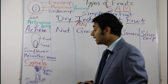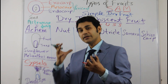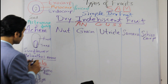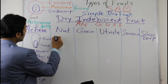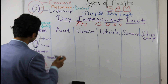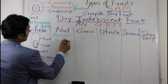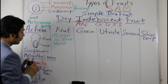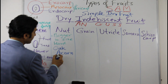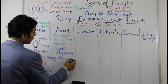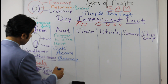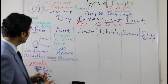The next type is nut. Nut is like achene but it is a bigger and harder structure that is not broken easily. An example is found in oak trees, where the fruit is called an acorn. Oak is Quercus species — for example, Quercus leucotrichophora and Quercus floribunda. The nut has a tough outer structure and one seed inside.